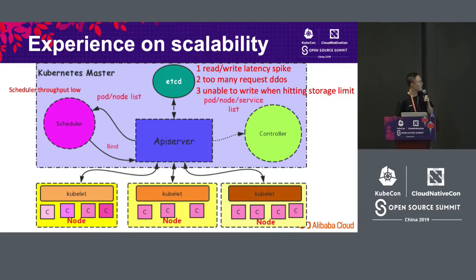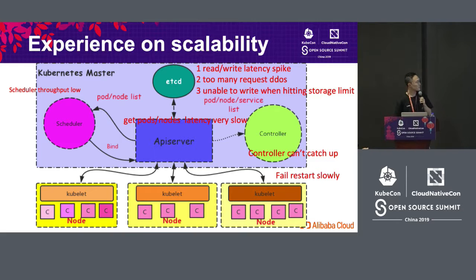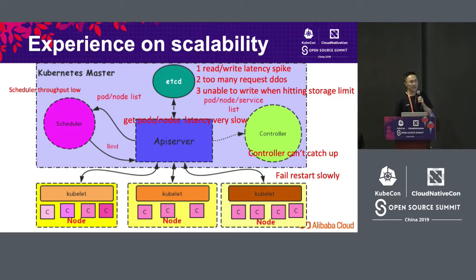Apart from ETCD, the scheduler needs to schedule or call containers, and the efficiency will be very low and latency will occur. If you look at the controller, the controller cannot meet the requirements of node updates, and there will be some failures or errors. Last but not least, when you reach such large-scale nodes, if one component fails, the reboot will take some time and will lead to low efficiency and lower SLA.